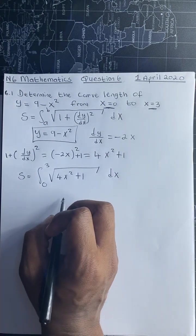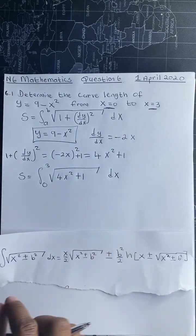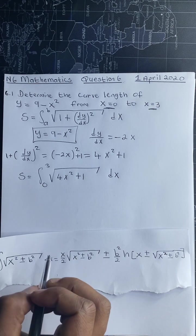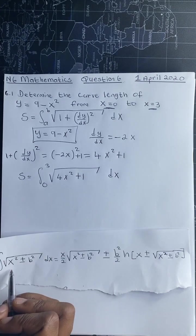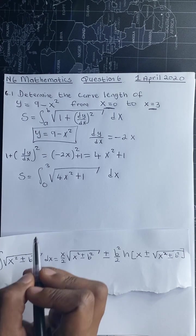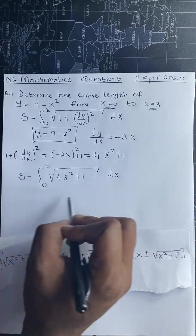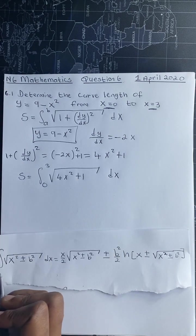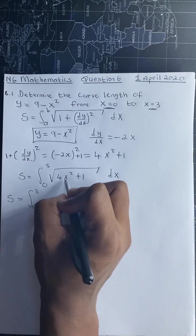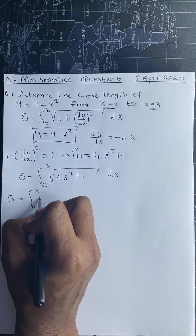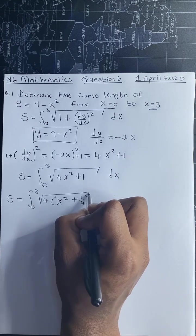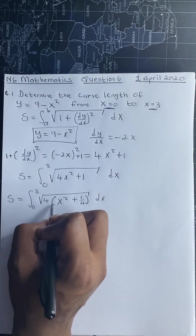To evaluate this integral we have to use the formula sheet. The formula is the integral of sqrt(x² ± b²) dx. We have to make sure our integral matches this form. This formula does not have a coefficient before x squared — it only has 1 — but we have 4 as the coefficient of x squared, so we have to manipulate this integral. We take 4 as a common factor so that we have 1 as the coefficient of x squared.